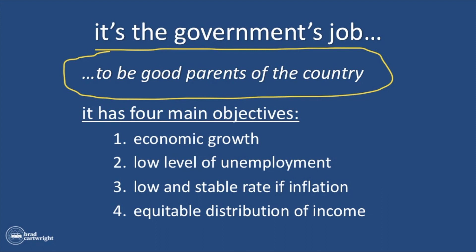Those two groups need to be cared for equally, but they can't always be cared for the same way — and that's where you get the left and right sides of the political spectrum. The government's job is to be as good a parent as possible, and those parents are politicians who get elected. There are four main objectives of any good government: economic growth, low unemployment of 5%, a low and stable rate of inflation of 2%, and equitable distribution of income. These are the main objectives of all economic activity, and it's the government that's in charge of monitoring all of that.